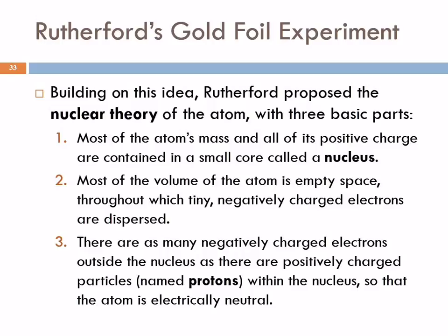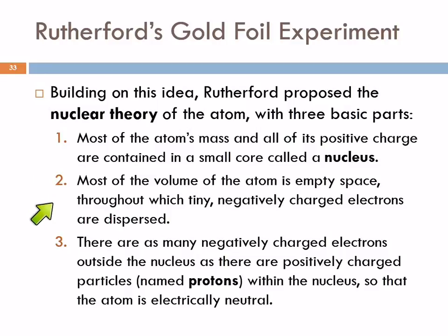Rutherford came up with the nuclear theory of the atom. Three basic ideas: most of the atom's mass and all of its positive charge are contained in a small core called the nucleus; most of the volume of the atom is empty space; and within that empty space we have tiny negatively charged electrons that are dispersed. This theory says nothing about what the electrons are doing - we'll get to that later.